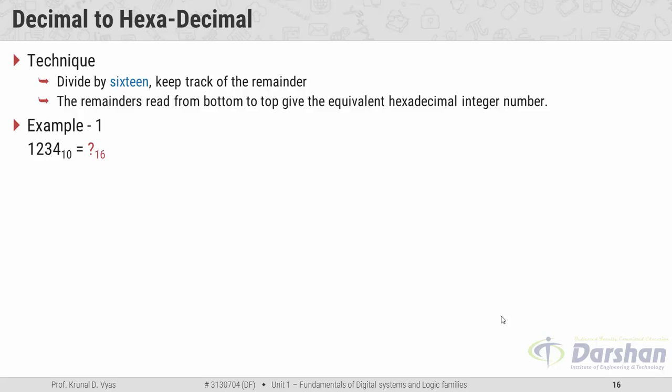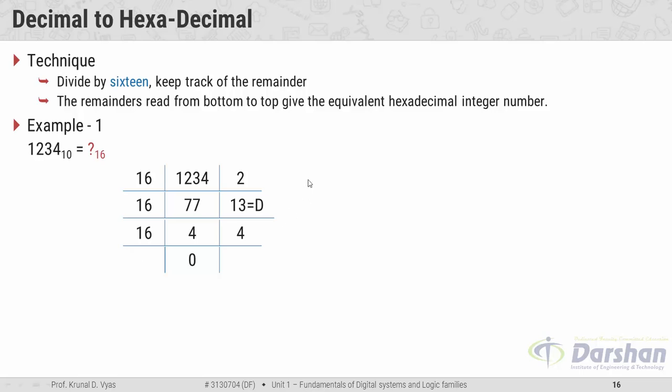Let us take the example: 1234 in decimal. Dividing 1234 by 16 gives quotient 77 and remainder 2. Then 77 divided by 16 gives quotient 4 and remainder 13. Repeating until the quotient is 0: in hexadecimal, digits 0–9 stay the same and 10–15 are represented as A–F, so 13 is written as D. The final answer is 4D2.